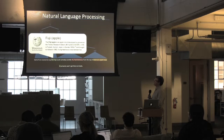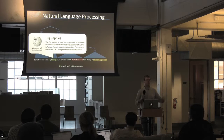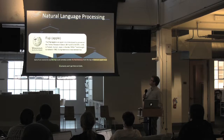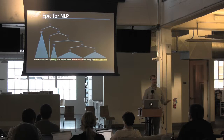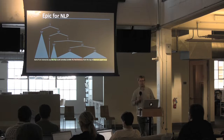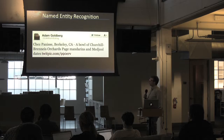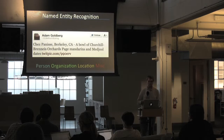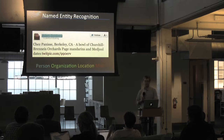Another thing you might be interested in is canonicalization or entity linking — knowing that 'Fuji' is an apple and not Mount Fuji or Fuji film. Epic right now supports a subset of this: the syntactic parsing part and also named entity recognition, which is recognizing people, places, and things. As an example, if you have a tweet like 'Chez Panisse, Berkeley, California, a bowl of Churchill-Bernet orchards, page mandarins, and medjool dates,' we want to extract the people, places, things, and other stuff like movies and books.